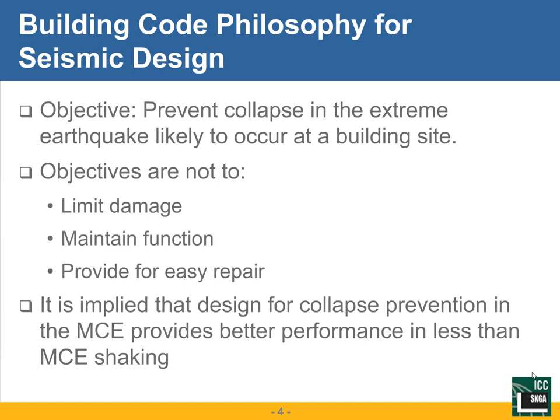Specifically, there's nothing in seismic design — nothing required by the building code — that is specifically aimed at limiting damage, maintaining function, or providing for easy repair. Instead, it's really implied that designing for collapse prevention in very large earthquakes — what we design for is called the maximum considered earthquake — provides better performance in smaller than MCE ground shaking.